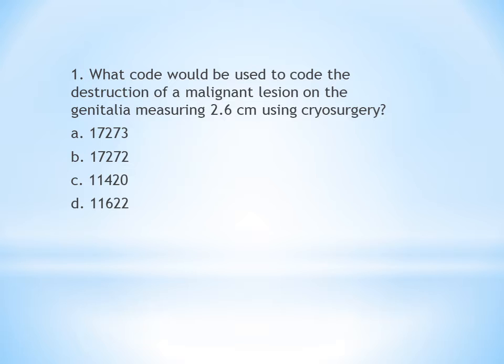Once the lesion type is confirmed, the next things to note are: identify the site, identify the body group, and identify the diameter. The site given here is genitalia and the diameter is 2.6 cm. Now open your CPT textbook and find out which body group genitalia comes under for destruction of a malignant lesion.